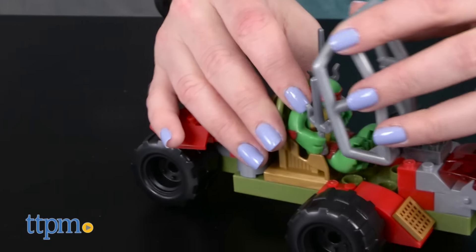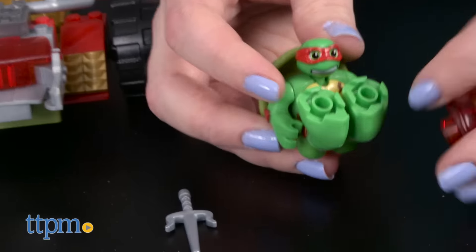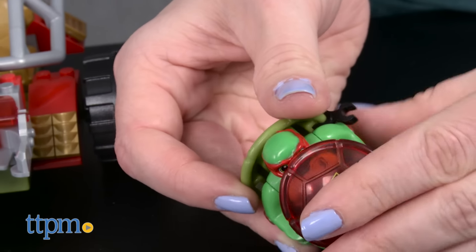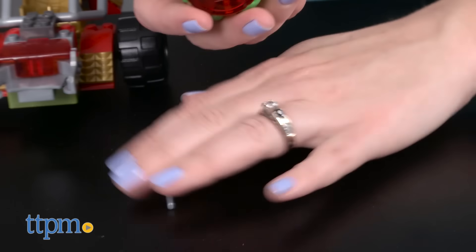The buildable Raph micro-action figure fits under the cycle's opening cockpit. Kids can also use the Shell projectile to turn Raph into a ball and roll him into battle.